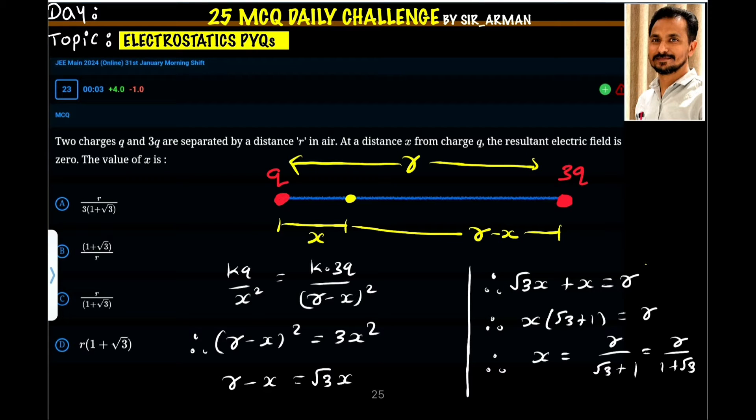Two charges Q and 3Q are suspended by a distance R in air. At a distance X from charge Q, the resultant electric field is zero. The value of X is: